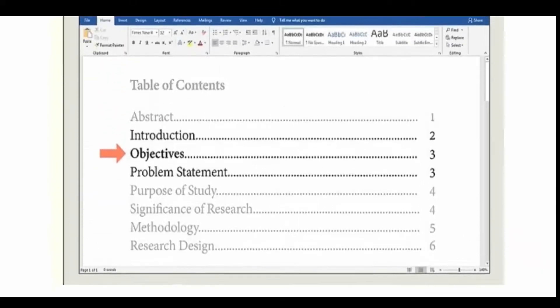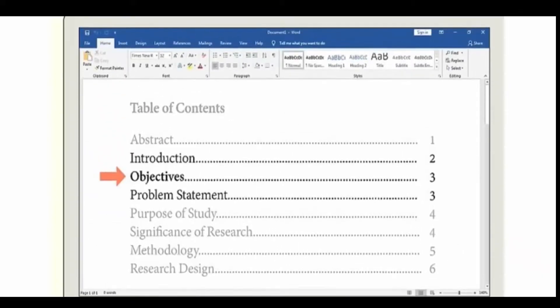At the very least, the abstract should list the general objective. This tells the readers what your study is working towards.